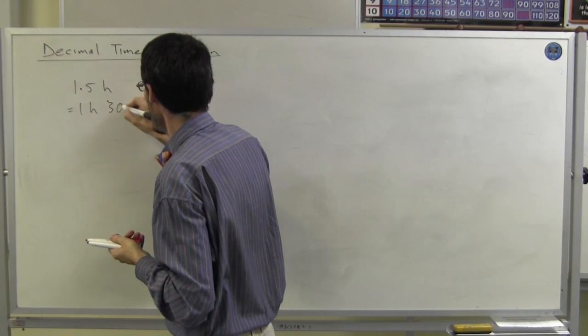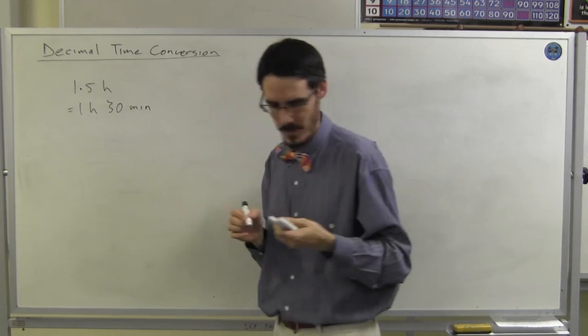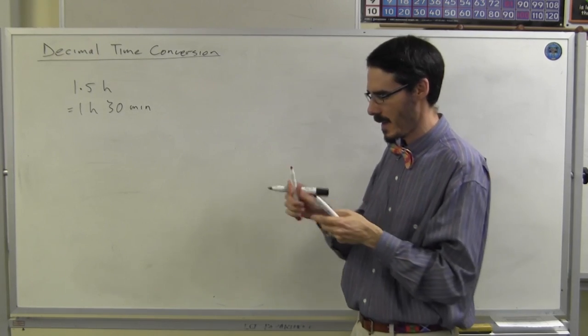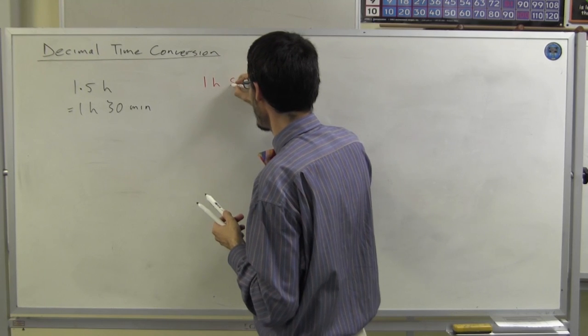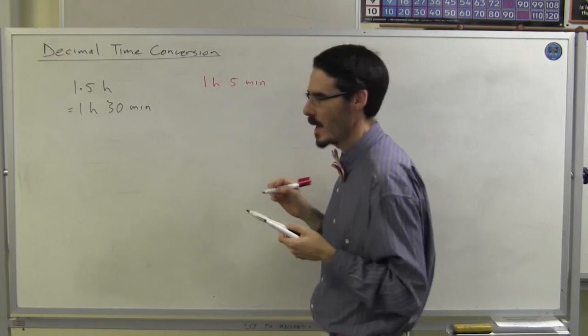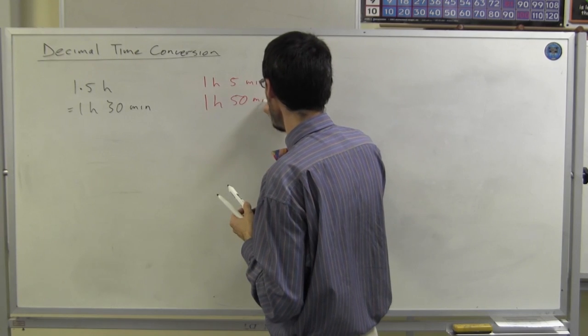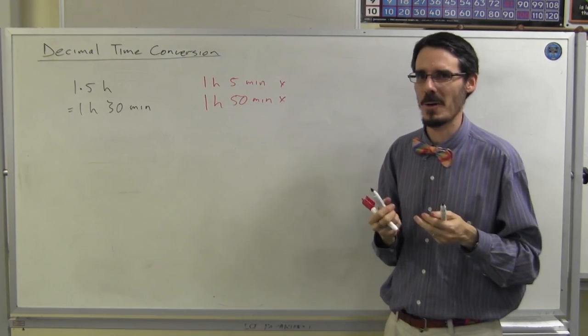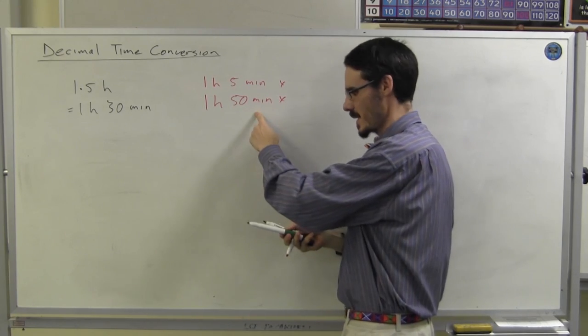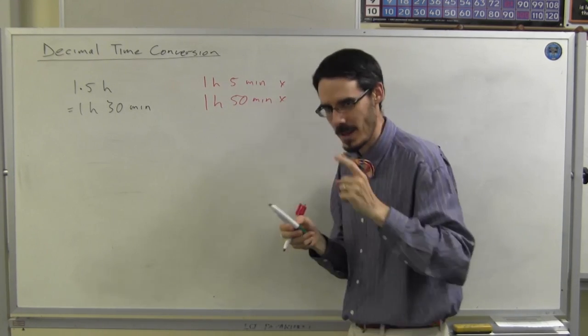So that's 1 hour and 30 minutes. No one looking at that is going to think, it's 1 hour, 5 minutes. Or 1 hour, 50 minutes. Both of these are incorrect. And they're obvious. No one does this.